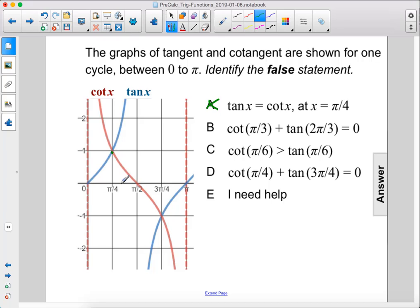Cotangent of π/3, which is about here, so that would be this line there, plus tangent of 2π/3, so that's going to be about there.